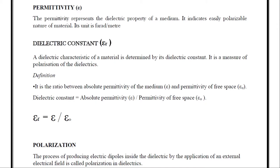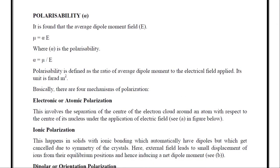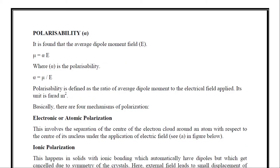Polarization has different types: electronic polarization, ionic polarization, and dipolar or orientation polarization. Polarizability: It is found that the average dipole moment mu is given by mu equals alpha times E, where alpha is the polarizability. Polarizability alpha equals mu divided by E. It is defined as the ratio of average dipole moment to the electric field applied. Its unit is farad-meter squared. Polarizability tells us how much we can polarize a dielectric material by application of electric field.